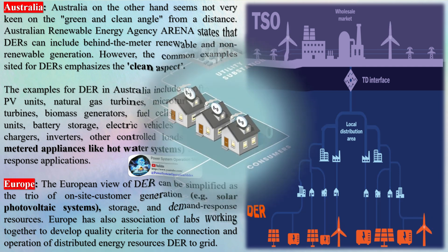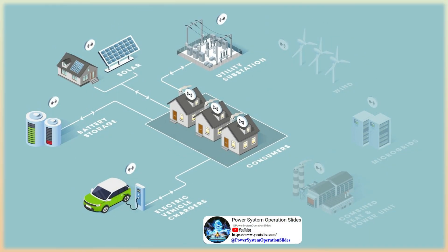The European view of DER can be simplified as the trio of on-site customer generation (e.g., solar photovoltaic systems), storage, and demand response resources. Europe also has an association of labs working together to develop quality criteria for the connection and operation of distributed energy resources to the grid.